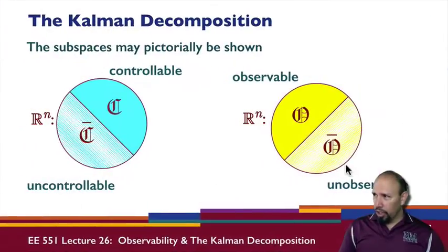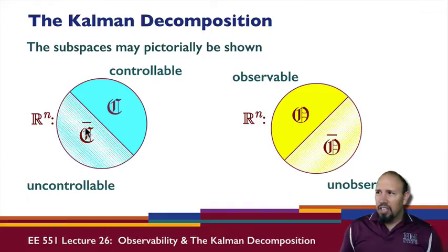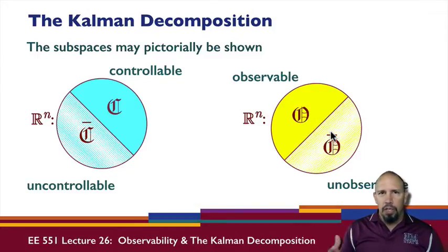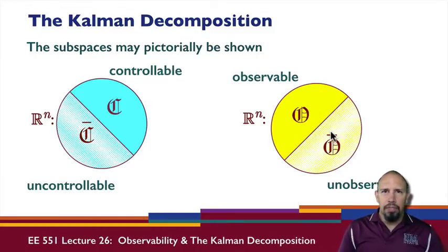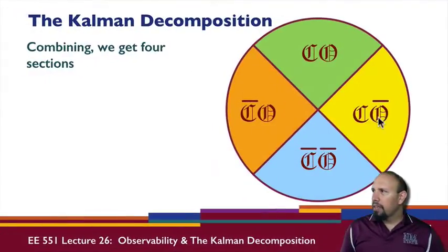We can pictorially draw these subspaces. In terms of controllability, we have the controllable subspace and the uncontrollable subspace. I've shown them in half here, but in general they wouldn't be equal — this might be really small compared to that. Similarly for the observable and unobservable subspaces. They're independent properties: controllability depends on A and B, while observability depends on A and C. We can combine them to get four different sections.